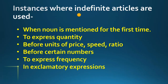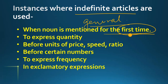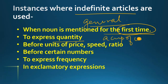There are some instances where indefinite articles are used when a noun is mentioned for the first time. जब भी कोई noun पहली बार आपकी बातचीत में, communication में या sentence में आ रहा है, तब आप उससे पहले indefinite article use करेंगे क्योंकि वो एक general noun है. To express quantity — किसी भी चीज़ की अगर आप quantity express करना चाहते हैं, तब भी आप indefinite article use करेंगे. For example, 'I want a cup of coffee' — यहाँ पर 'a' quantity indicate कर रहा है.